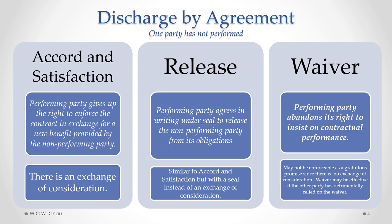The last type of discharge by agreement where one party has not performed is called a waiver. A waiver occurs where the performing party abandons its right to insist on contractual performance. Because there is no exchange of consideration, a waiver may not be enforceable — it is only a gratuitous promise with nothing given in return. Courts have said, however, that in some situations a waiver may be effective if the other party has detrimentally relied on it.